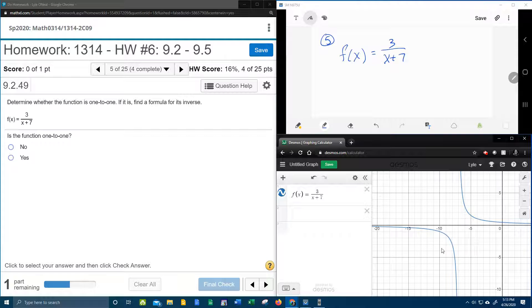If we look at that graph, you can see that every horizontal line that I could possibly draw is going to touch this graph only once. In fact, we do have a horizontal asymptote here where the graph doesn't exist, but every other horizontal line is going to touch only once. So that's one way to tell if it's one-to-one—if it passes the horizontal line test.